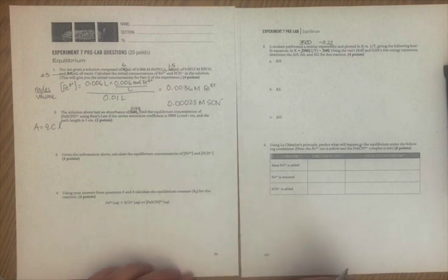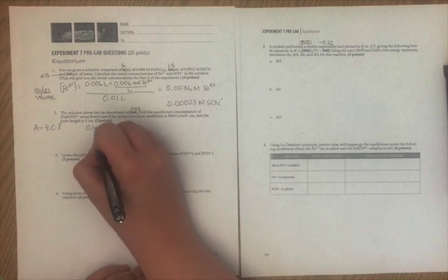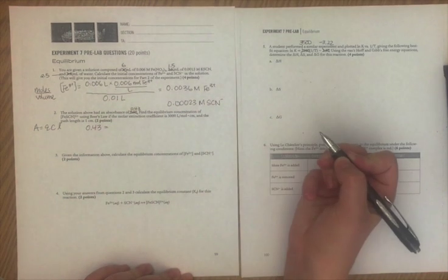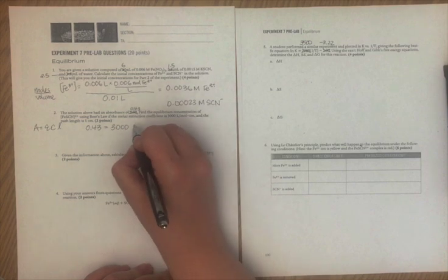So all we have to do is plug in the numbers that we have here. Again, I've changed them, but if our absorbance is 0.43, that will equal epsilon, which they've given 3,000 liters per mole centimeter.